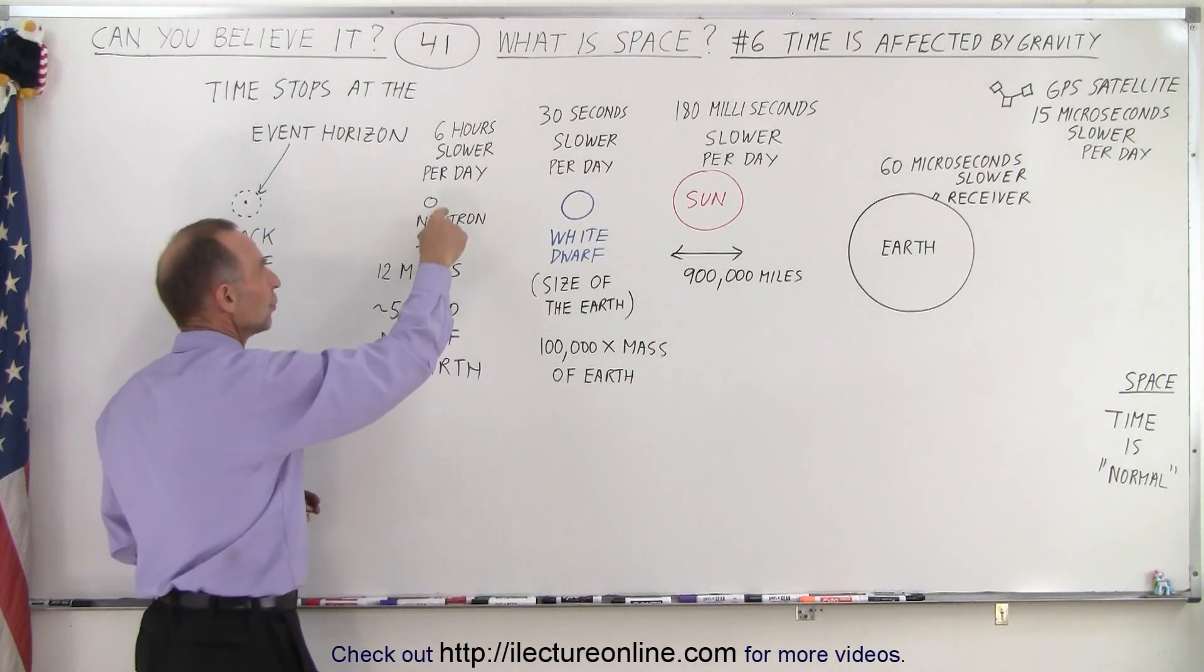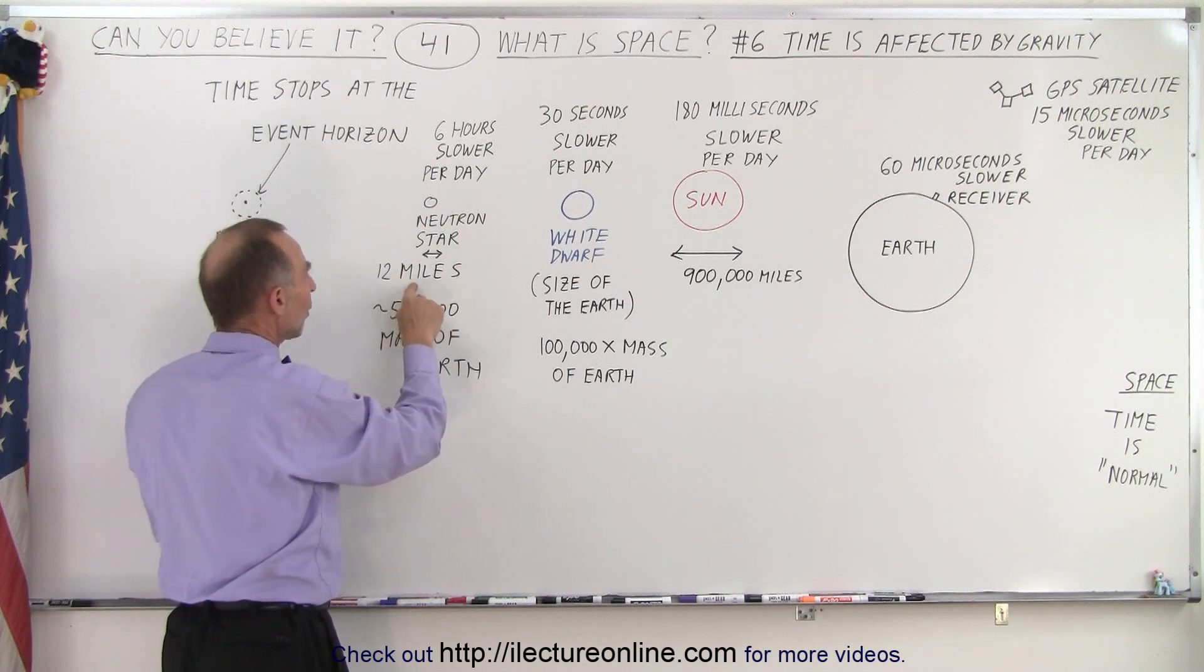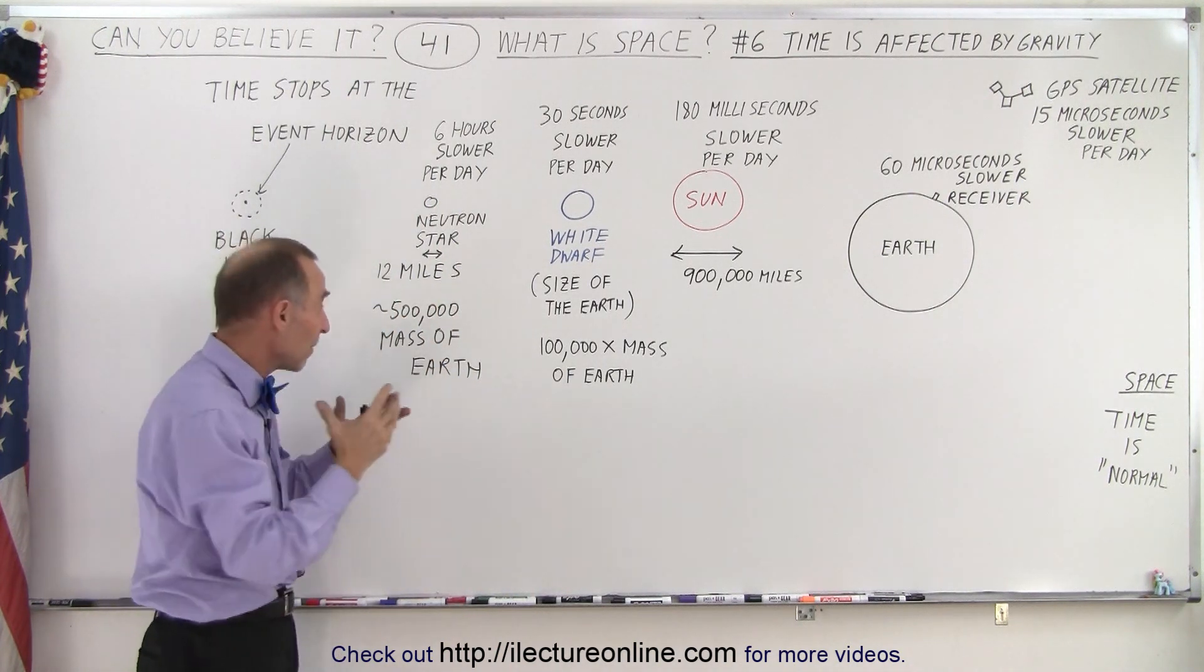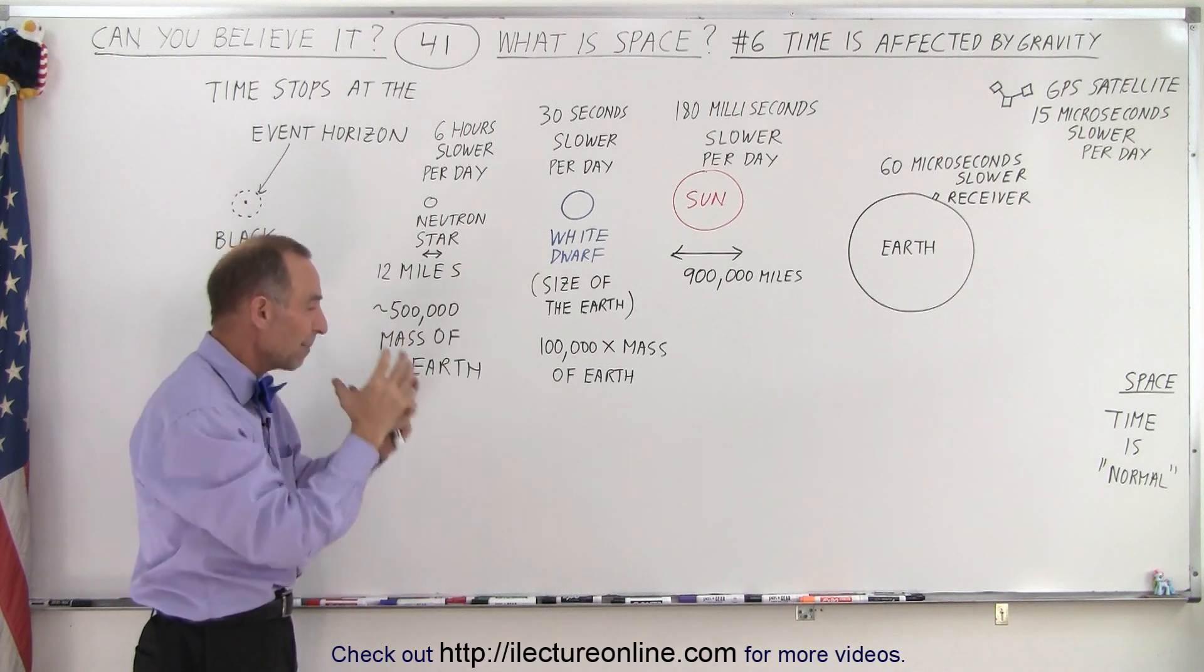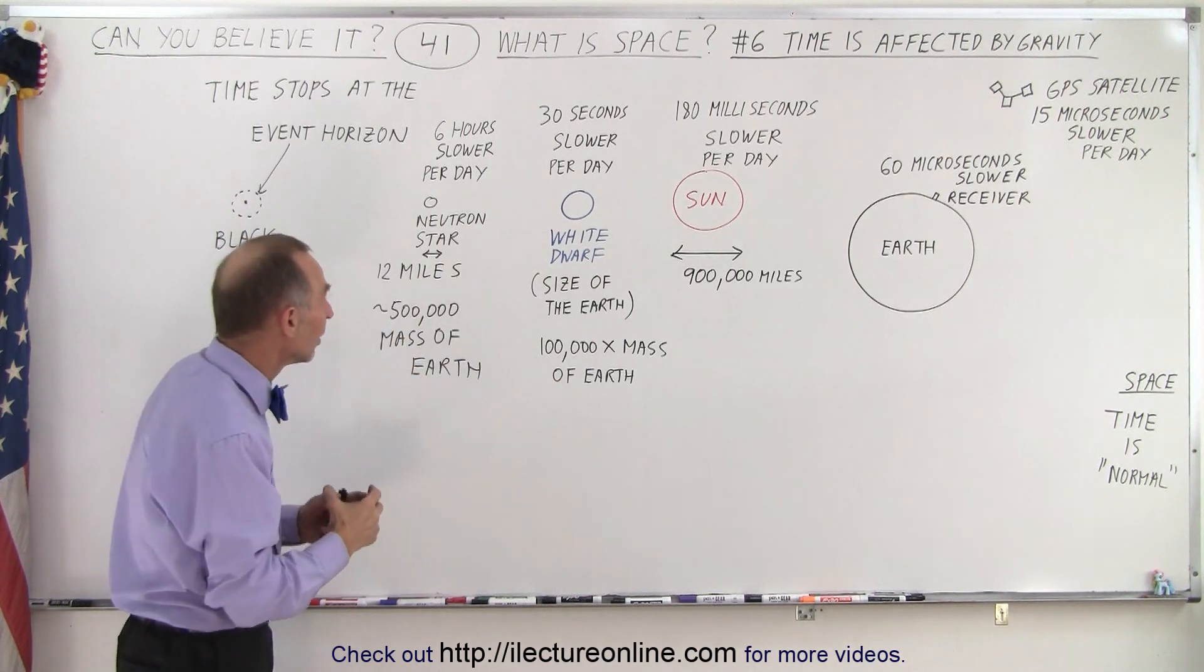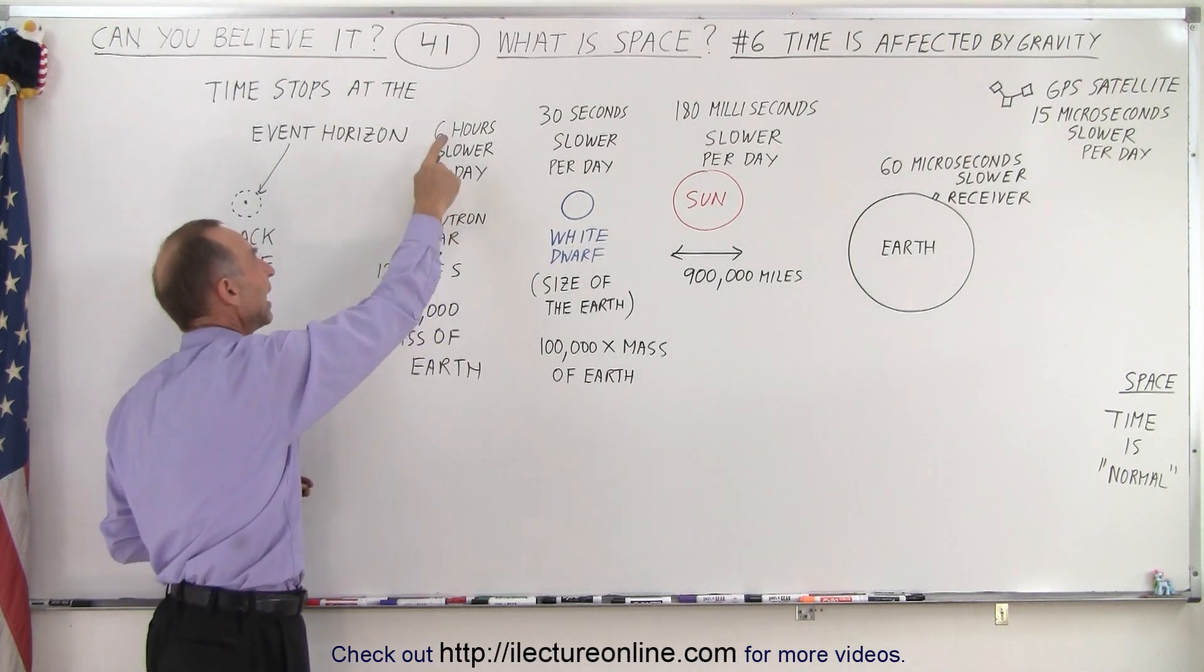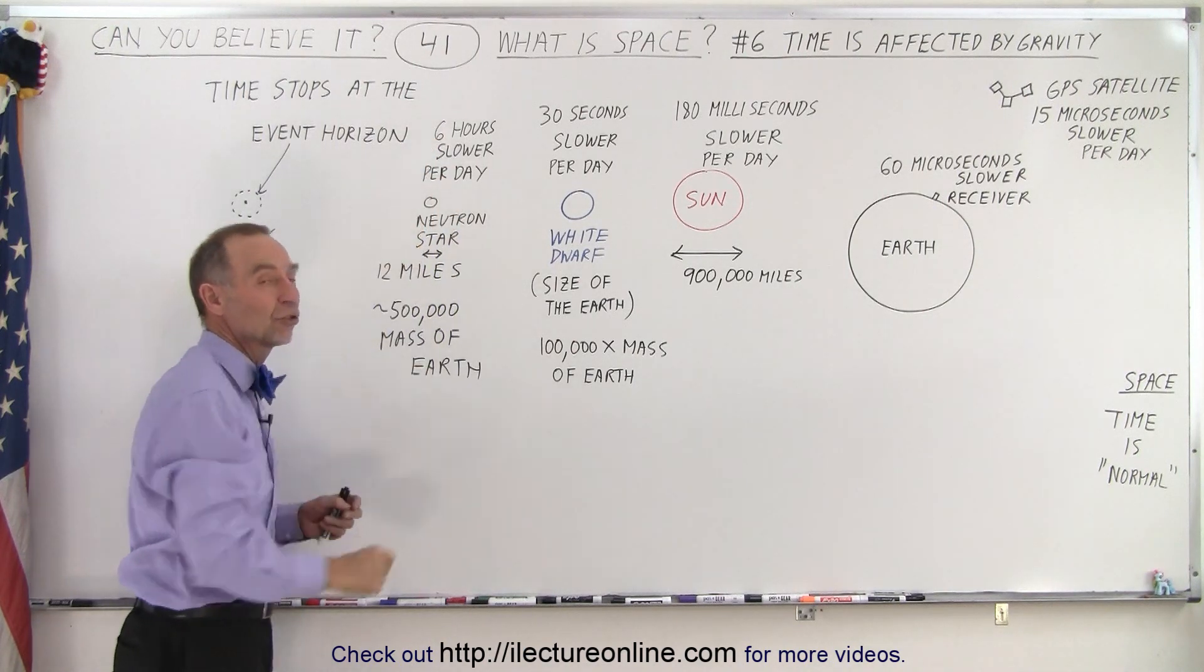If we then go to the surface of a neutron star, which is only 12 miles across and contains about 500,000 times the mass of the Earth, well that is so enormous in mass and so small in diameter that the gravitational forces are absolutely enormous on the surface and clocks will run 6 hours slower per day.